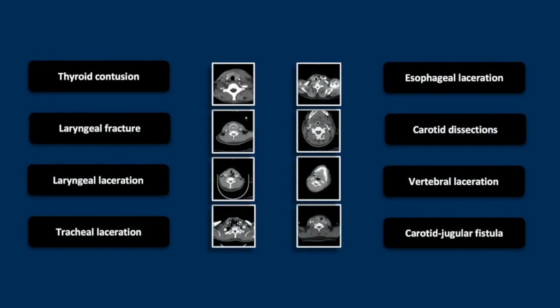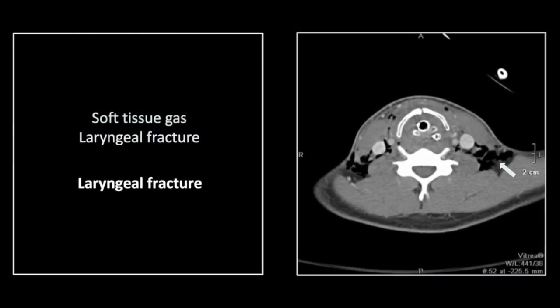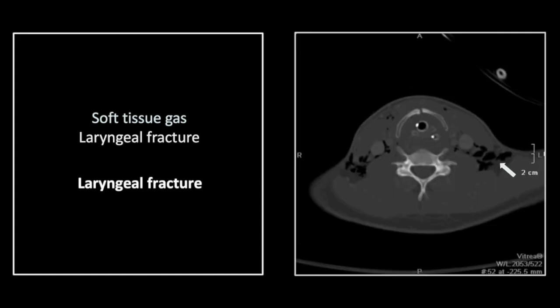Our next case is a fracture of the laryngeal cartilage. There is a good deal of soft tissue gas in the cervical soft tissues. Here in the anterior midline, in the laryngeal cartilage, there is a linear hypodensity. On bone windows, you can see the soft tissue gas and the rupture of the anterior laryngeal cartilage. There is adjacent ill-defined sclerosis, most likely related to the bending of this cartilage prior to its fracturing.